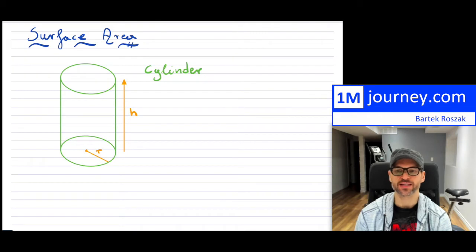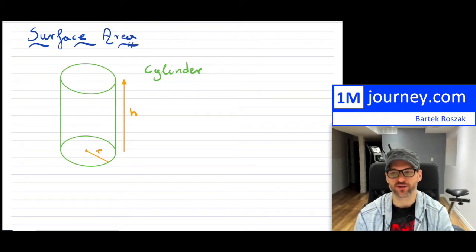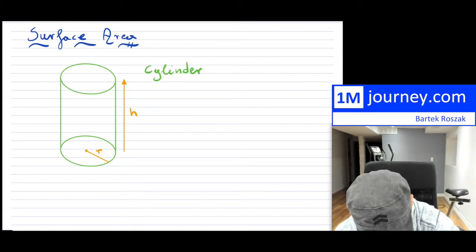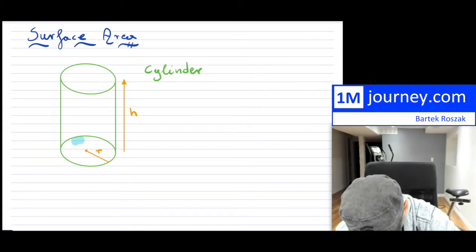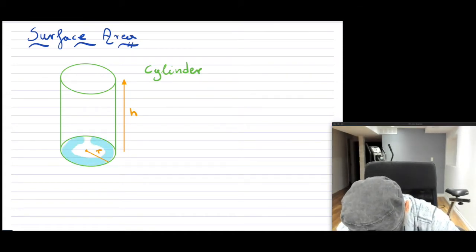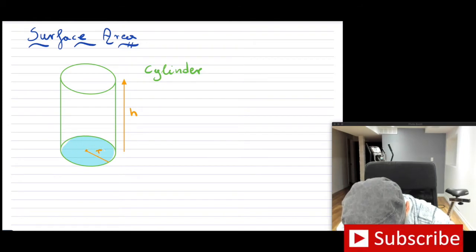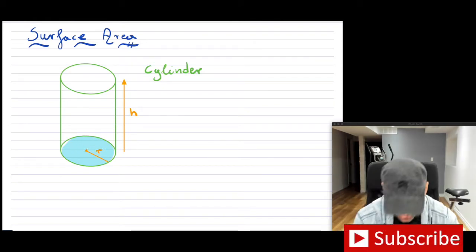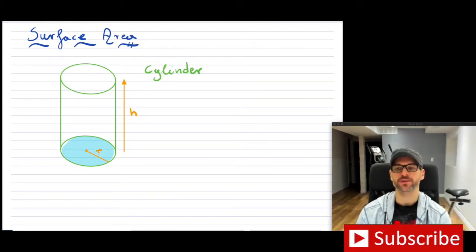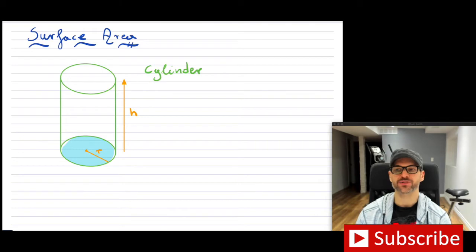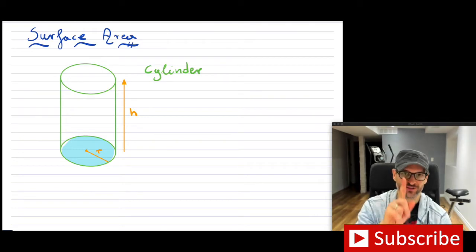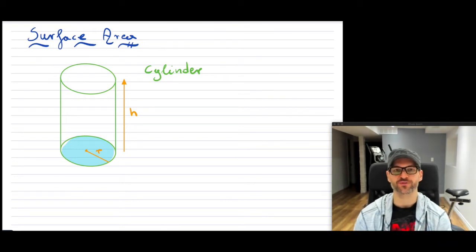So for any cylinder that you have, if you want to find the surface area, what we need to do is we have our base in here and we have our height. We're interested in the surface area, not the volume — volume is going to be a different video, so you'll see that.